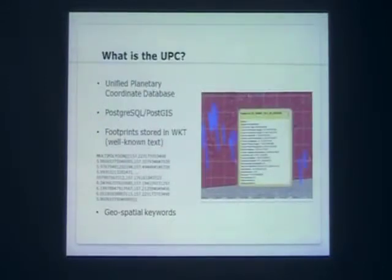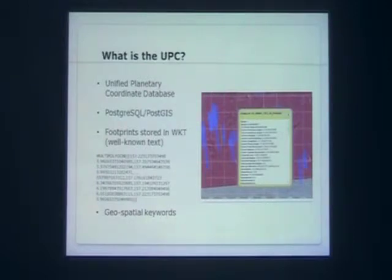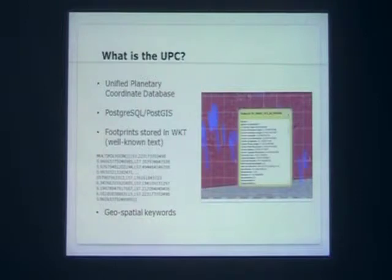UPC stands for Unified Planetary Coordinated Database. It's a database of geospatial information on footprints on images from various missions. I have a little graphic there that I cut from Pilot — it's got the footprints drawn out there. What we do is we grab images from the PDS and run them through a pipeline and a cluster, taking them through ISIS and generating all the geospatial information. We use SPICE to get the geometry and keywords like emission angles, center latitude, resolution, and phase angle, and make it searchable.